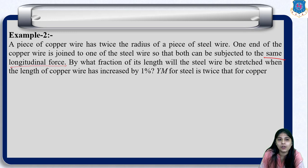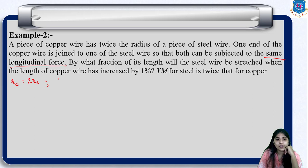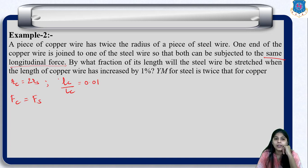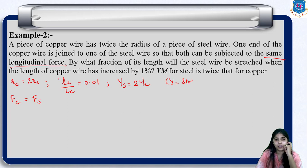So first, what is given? The copper wire's radius is twice the radius of the steel wire. Let us suppose RC is the radius of the copper wire. Both are subjected to the same longitudinal force. We need to find by what fraction the steel wire is stretched when the copper wire's length increases by 1%, i.e., δLC/LC = 0.01. Young's modulus of steel is twice that of copper.